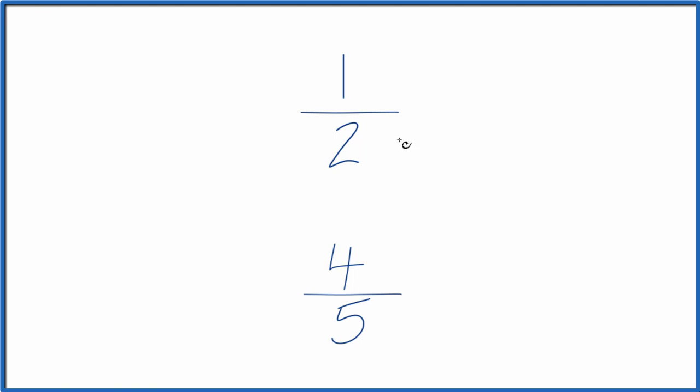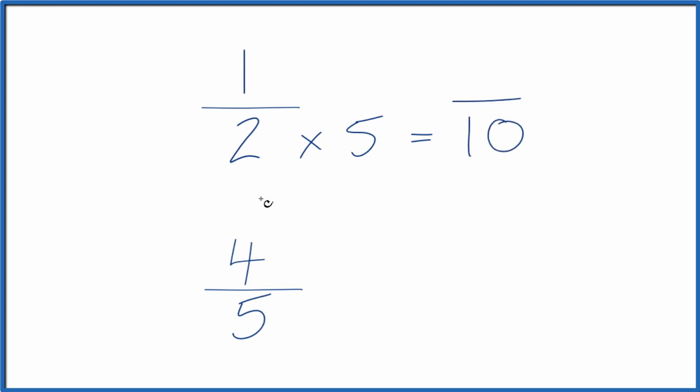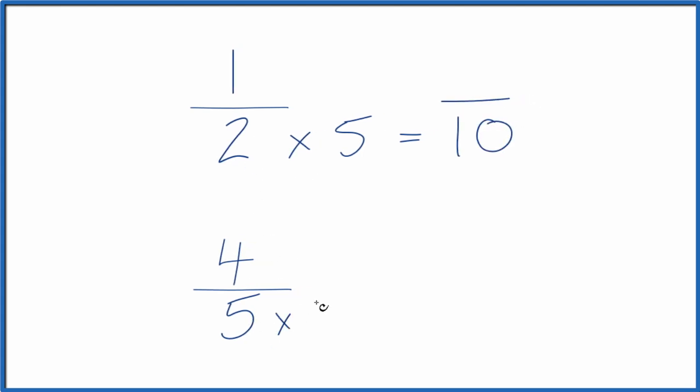To do that, why don't we multiply two times five. Two, then down here, multiply five times two. Five times two, that equals ten. So now we have the same denominator.